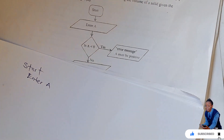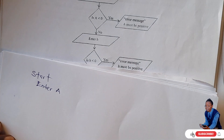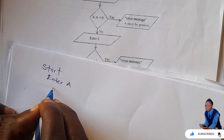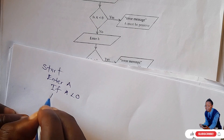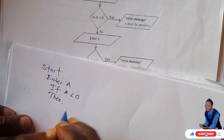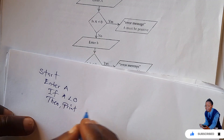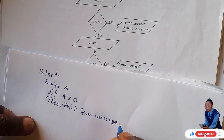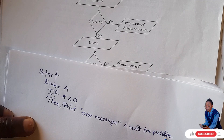This is where the condition starts — it's saying 'is A less than zero?' So what you do here is interpret it as: if A is less than zero, then print an error message. You say: print 'error message: A must be positive'.